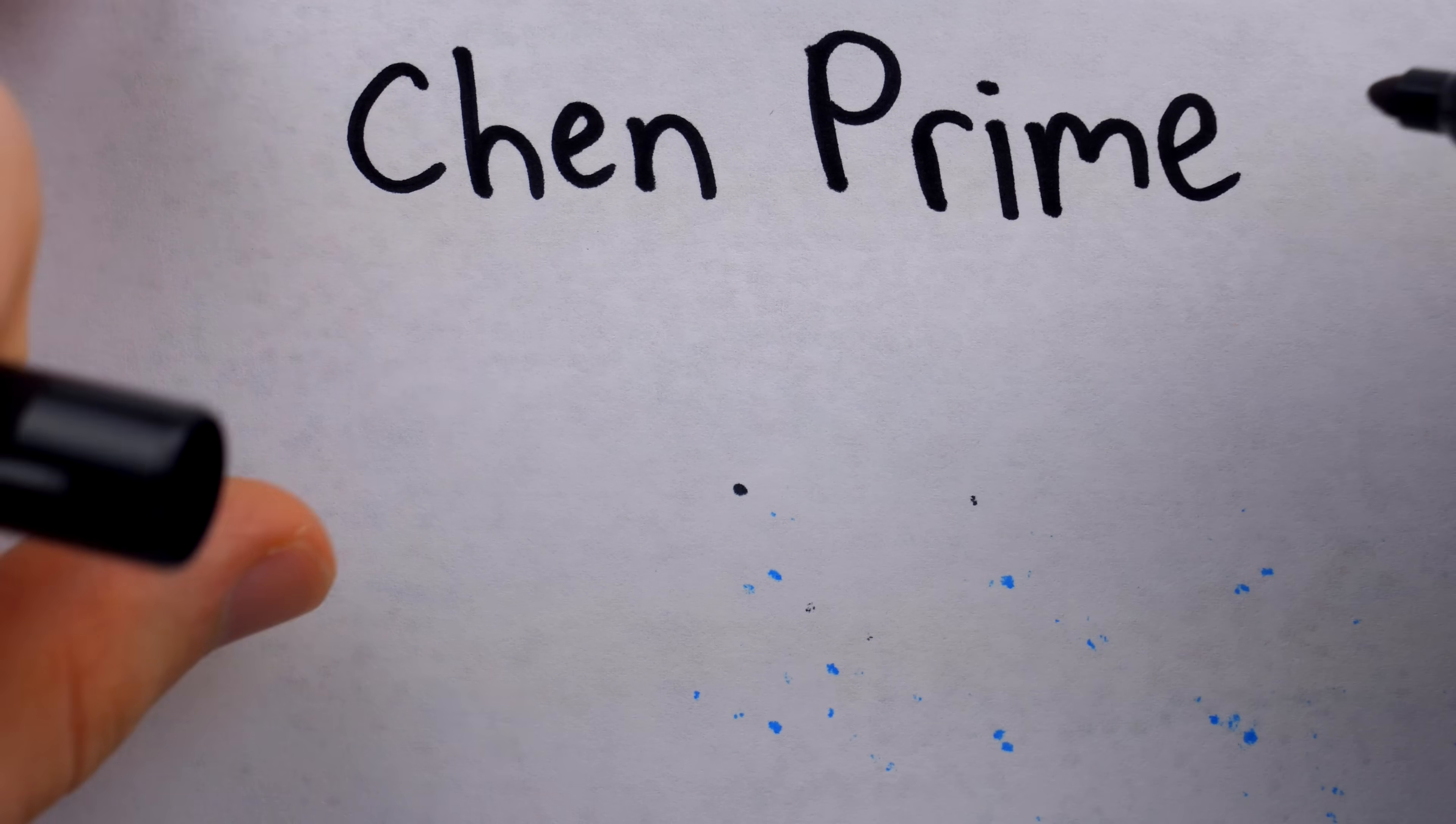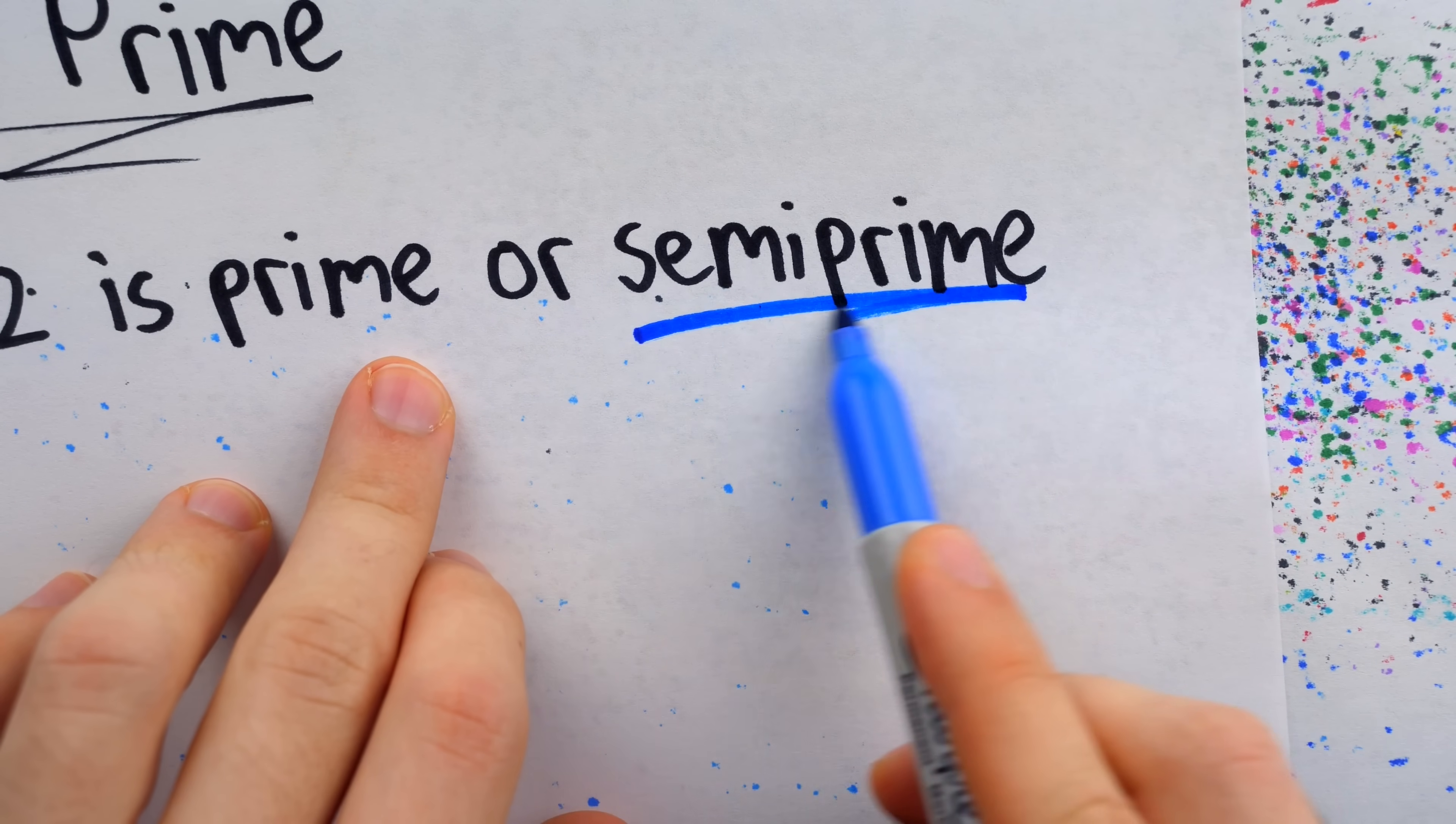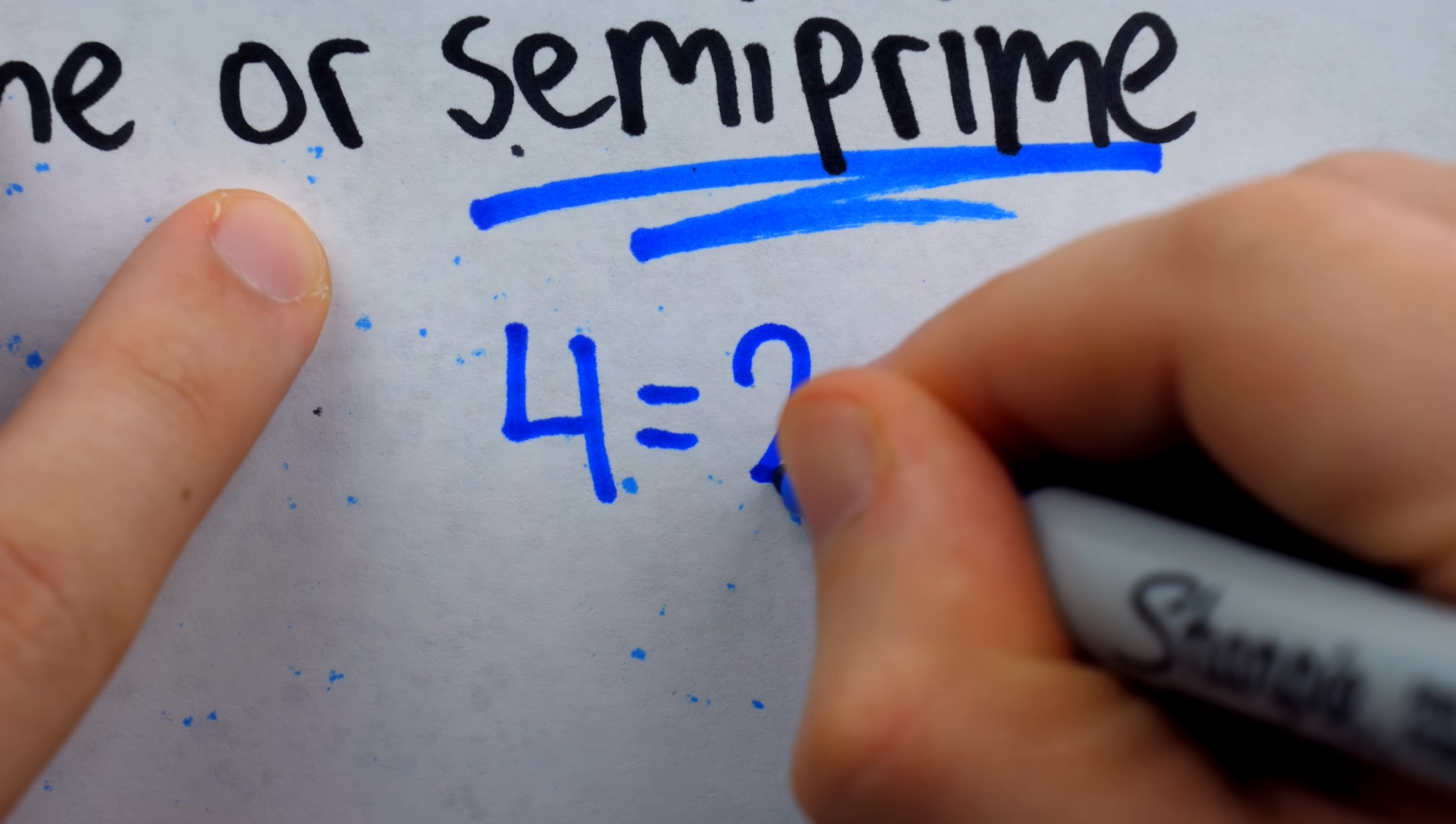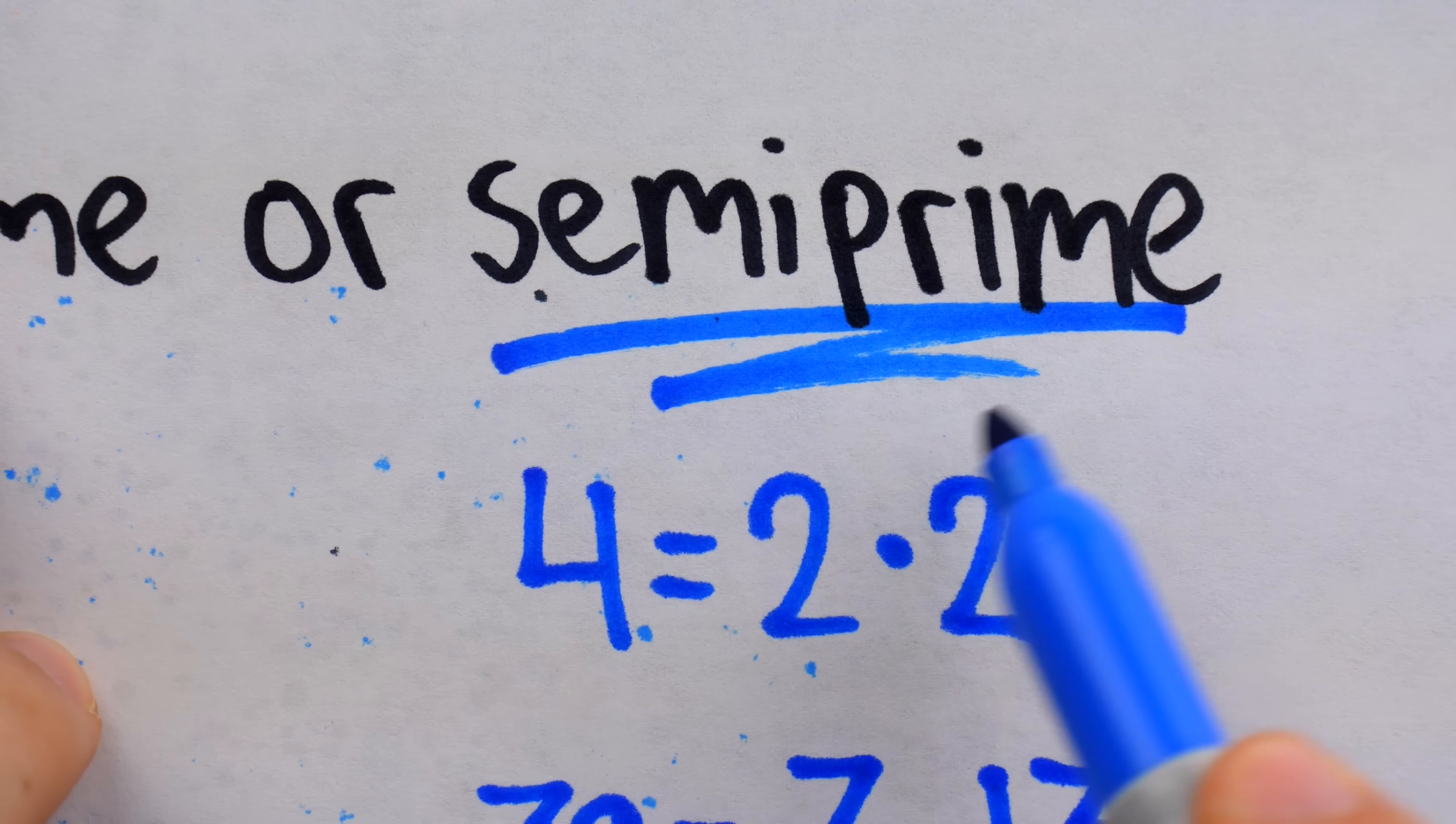But here's a type of prime where we can say if there are infinitely many or not. They're called Chen primes. A prime number p is called a Chen prime if p plus 2 is prime or semiprime. A semiprime is like a number that's almost prime. It's a number that has exactly two prime factors, for example 4, which has the two prime factors 2 and 2, or 39, which has the two prime factors 3 and 13. These numbers aren't prime, but they are semiprime.